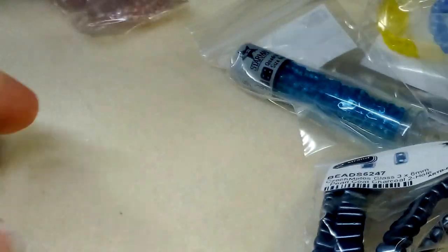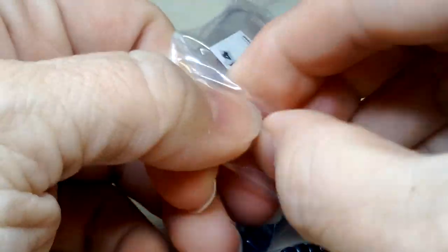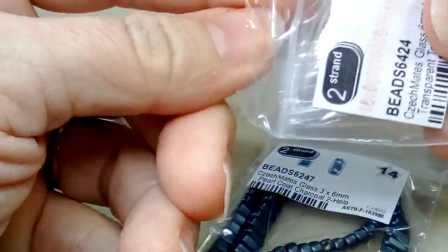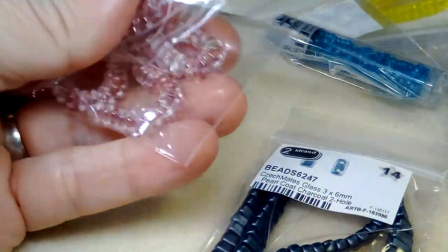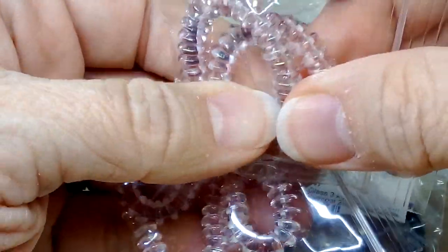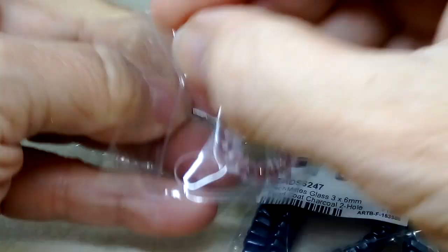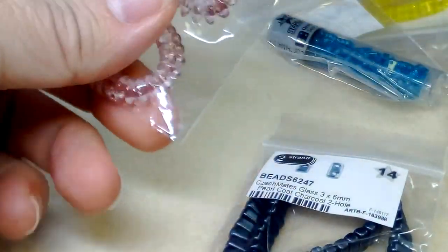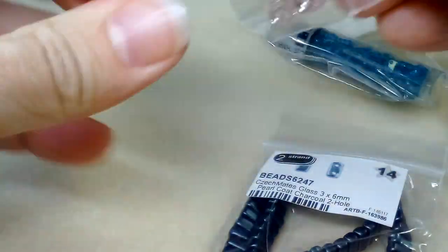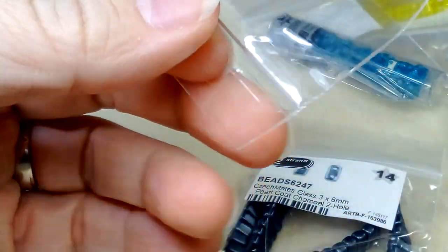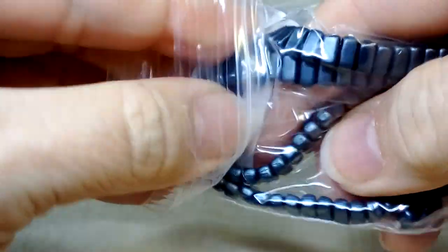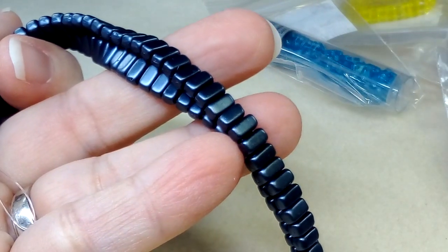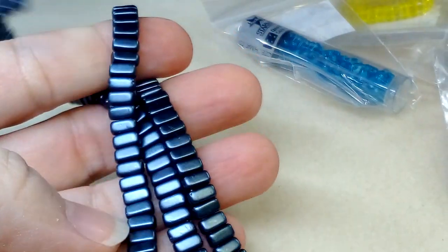We are definitely not getting through this. This is one of the orders that I was like, where is this? I've been waiting and waiting. These are lentils as well, transparent topaz pink number two. Oh, they're just gorgeous. These are really nice. Pearl coat charcoal, that is lovely.